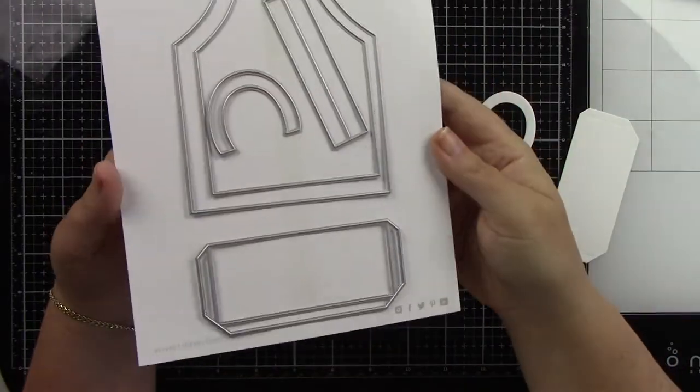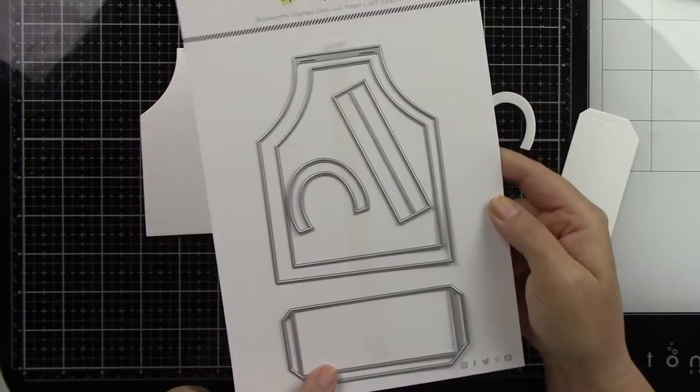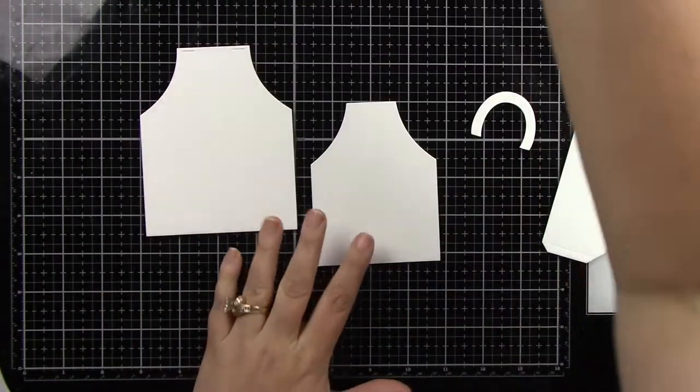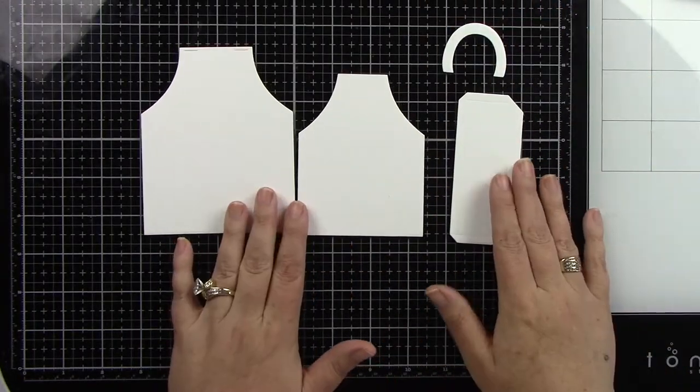So here is the Apron A2 card die. You've got an inner piece, an outer piece, your little pocket, and that little curvy piece is the neck piece for your apron.